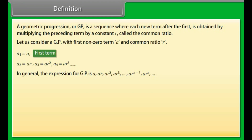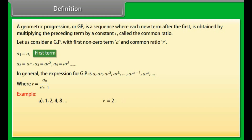In general, the expression for GP is: A, A×R, ..., A×Rⁿ⁻¹, A×Rⁿ, and so on, where R = Aₙ / Aₙ₋₁. Example: 1, 2, 4, 8, ... → R = 2. Example: 1, 1/2, 1/4, 1/8, ... → R = 1/2. Example: 1, −1/2, 1, −2, 4, ... → R = −2.